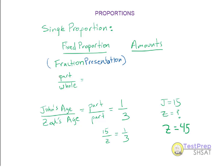In the part-to-whole case, suppose we have a probability problem where the probability of an event is 1 third. Here, 3 represents the total, not the partial amount. Say there are 90 samples taken — I set up my equation: part to whole equals 1 to 3. That represents out of a total of 90, how many would meet whatever condition — maybe the number of blue marbles picked. We already have our proportion equation set up, and N would equal 90 divided by 3, which equals 30.